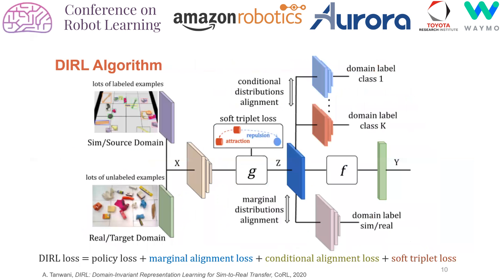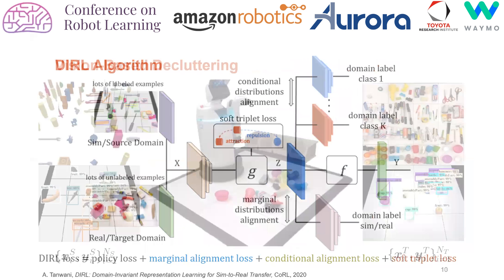The overall algorithm optimizes three additional loss functions: the marginal alignment loss optimized with adversarial learning using a domain discriminator, a conditional alignment loss that is also optimized with adversarial learning for each class separately, and the triplet distribution loss that makes the conditional distributions disjoint in the shared feature space.